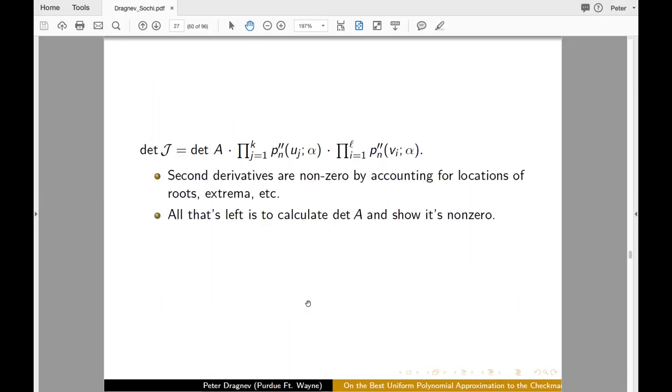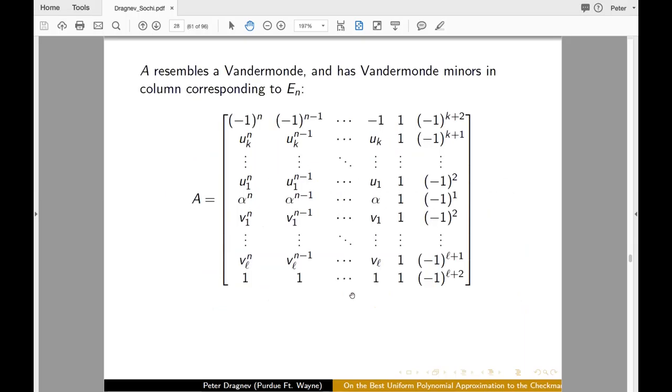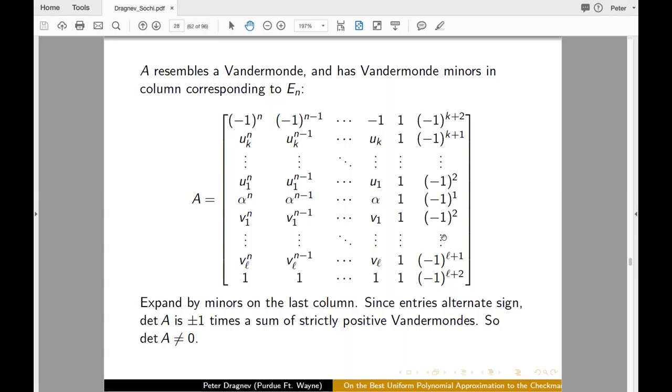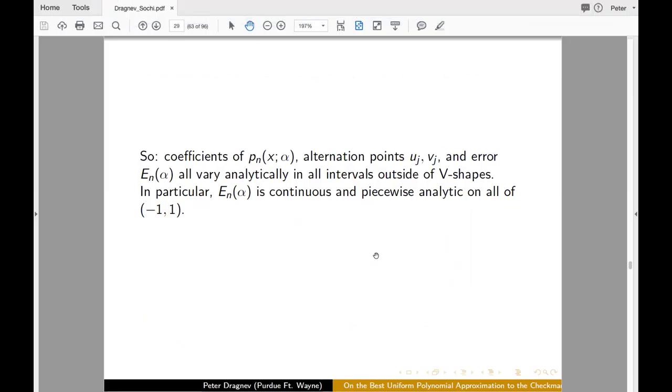So what happens to the determinant of A? Well, that turns out to be a very nice matrix. So this is what it looks like. So if we expand about the last column, we end up with really a Vandermonde. And they are all of the same sign. And because of that, there will be a minus one or one, depending on what the K and L parity is. But in general, the determinant is not zero. Therefore, we have differentiability of E_n alpha.